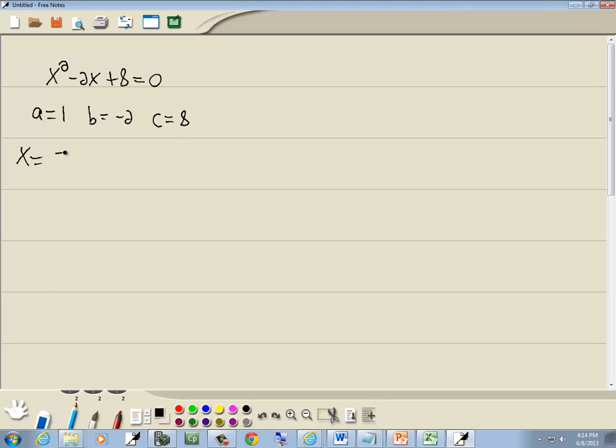Our formula is x equals negative B plus or minus square root of B squared minus 4AC all over 2A.